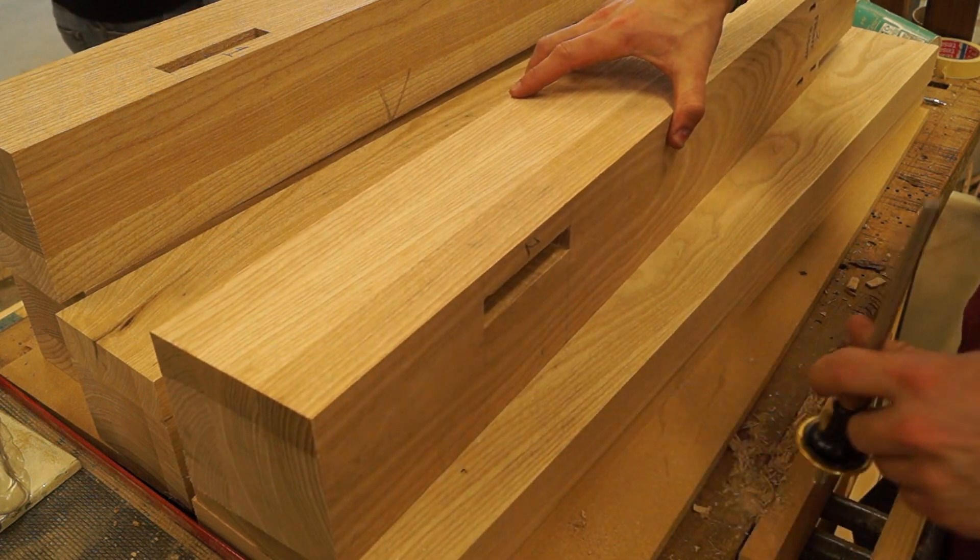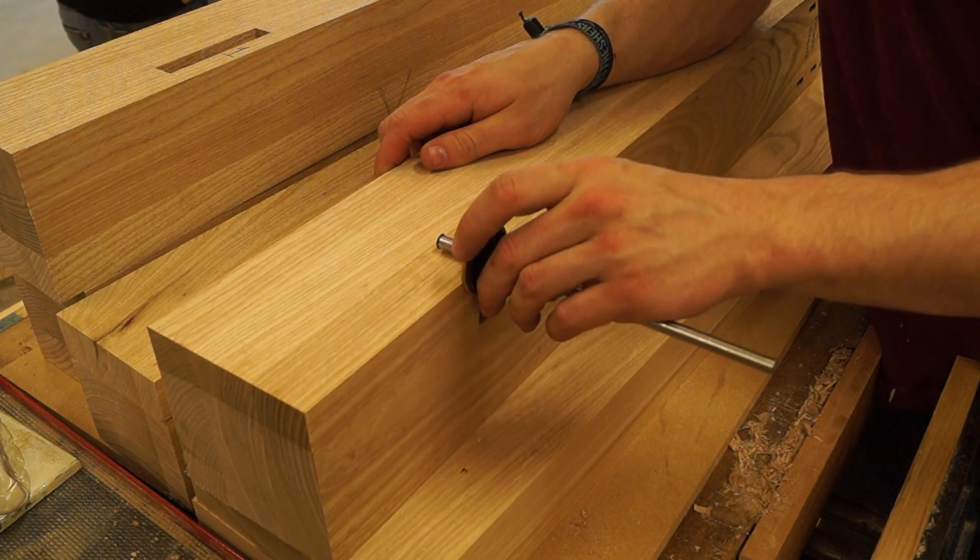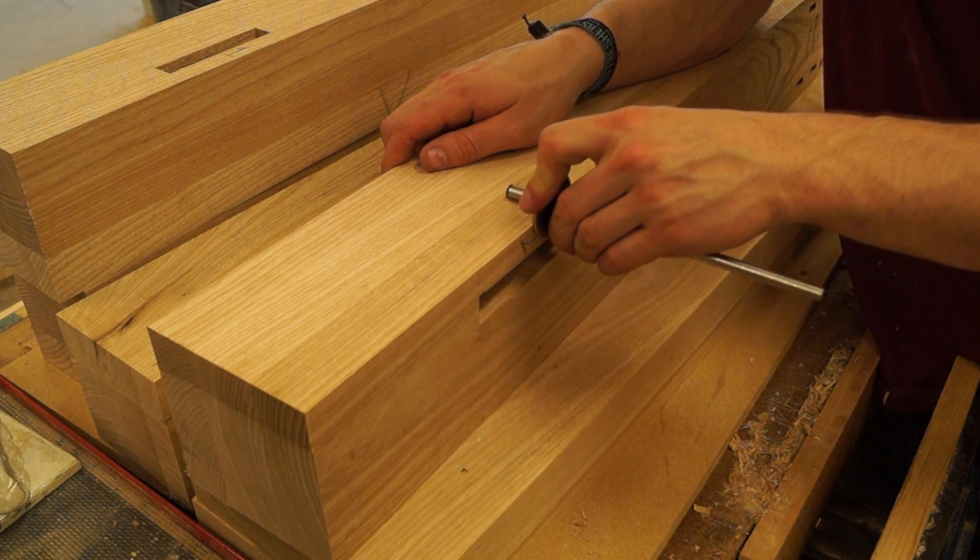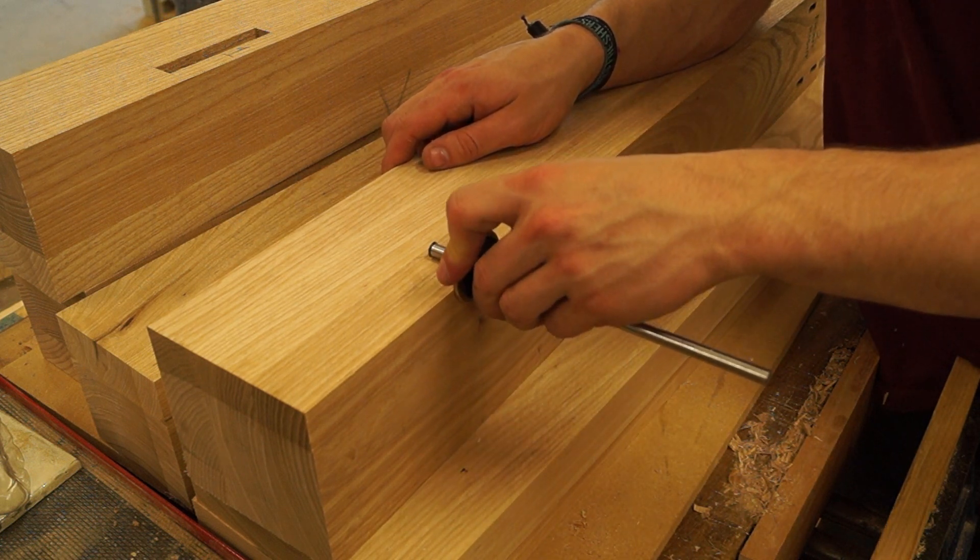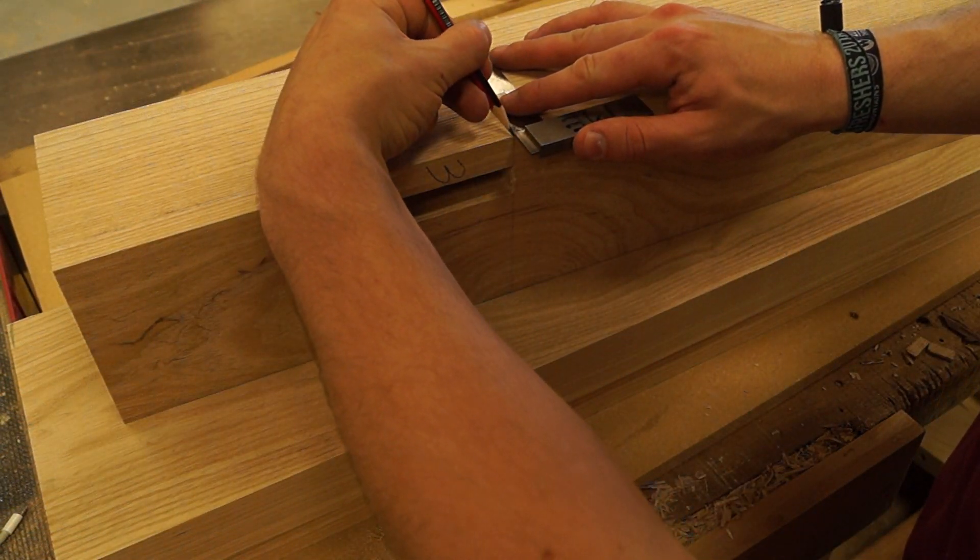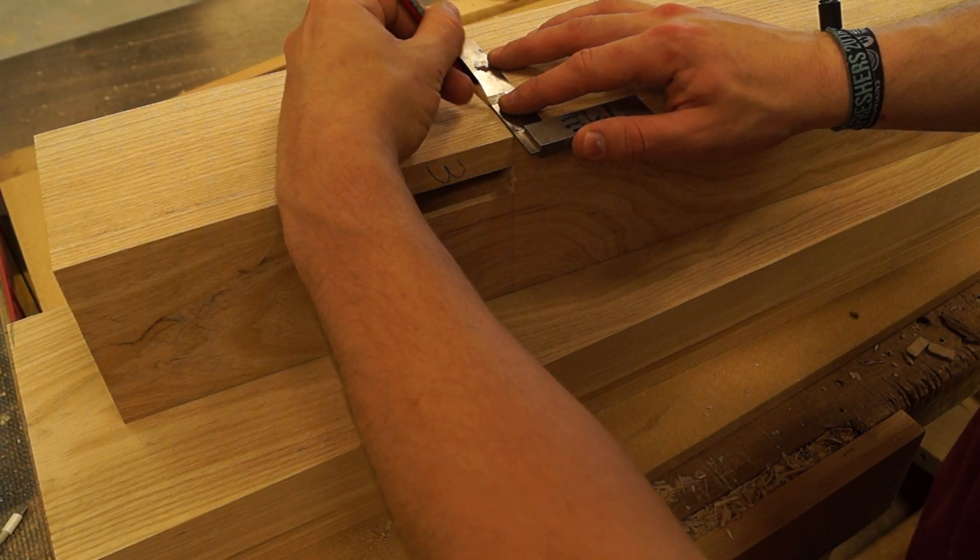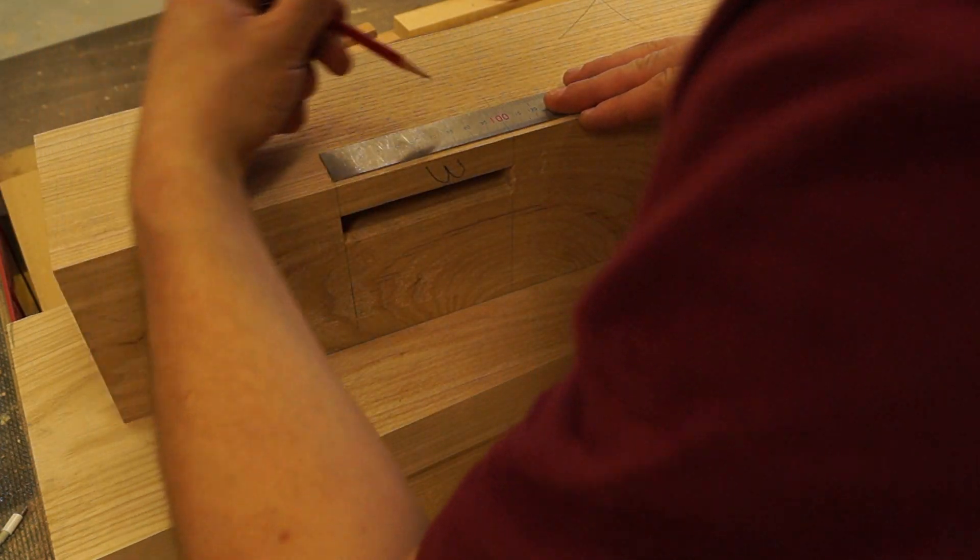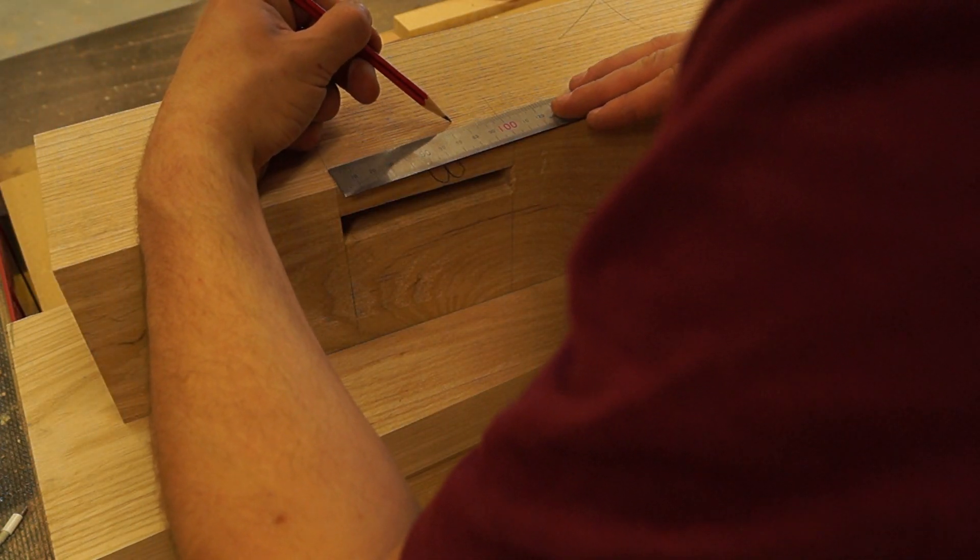Now we're onto draw boring. Draw boring, I'll go over it quickly. Essentially what it is, is you're driving a dowel through the side of the mortise and through the tenon to lock it all in place. Obviously this gives it a lot of strength, but what you can do to take it further is actually offset those holes in such a way that it pulls the tenon even more into the face of the leg.